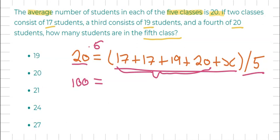And 17 plus 17 plus 19 plus 20 gives us the answer of 73 plus X equals 100.